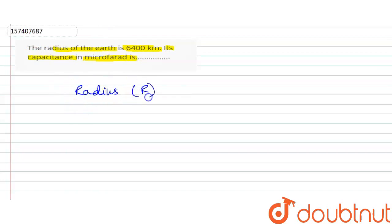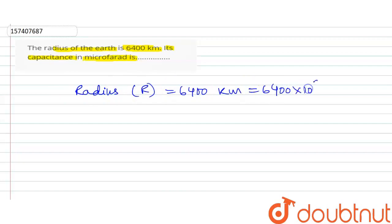R equals 6400 km, which equals 6400 into 10 to the power of 3 meters.